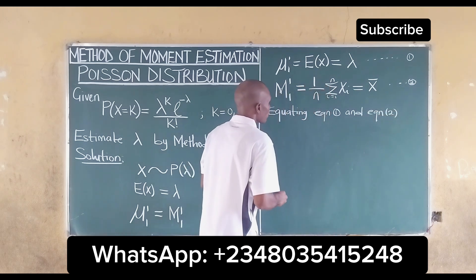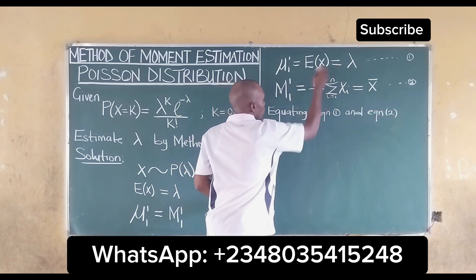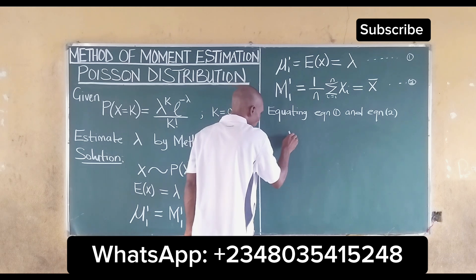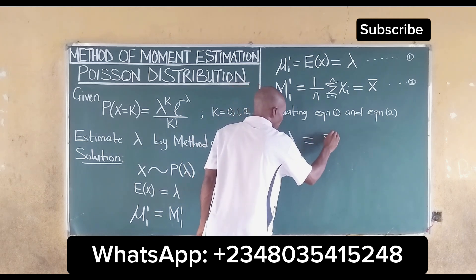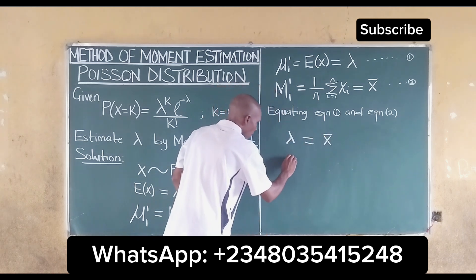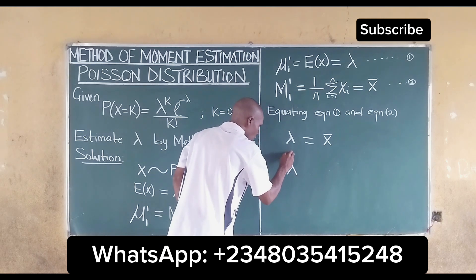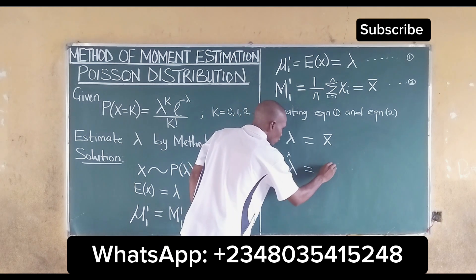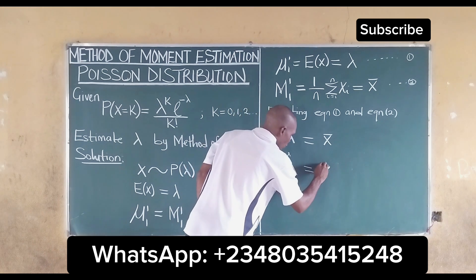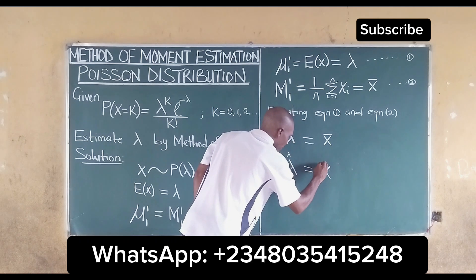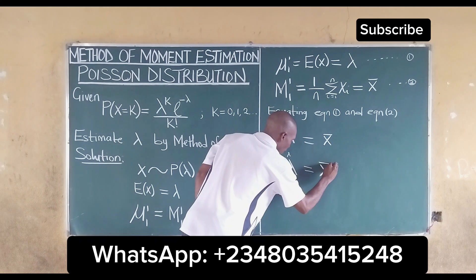If we equate them, we get lambda is equal to the mean. It then means that our estimate, lambda hat, is equal to the mean x bar.